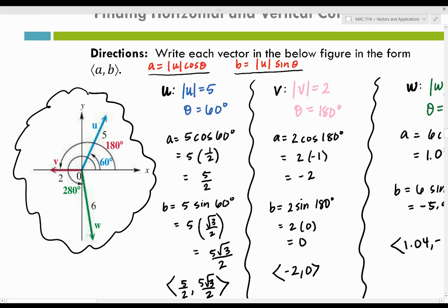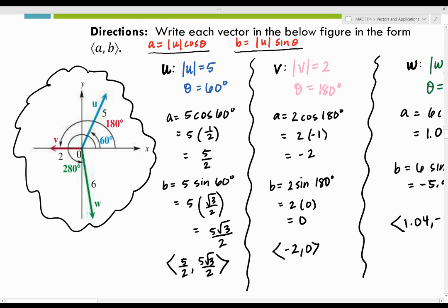For vector U with magnitude 5 and direction angle 60 degrees: cosine of 60 is one-half, so 5 times one-half equals 5 over 2 — that's the horizontal component. Sine of 60 degrees is square root of 3 over 2, and 5 times that gives 5 square root of 3 over 2 for the vertical component. I didn't use a calculator because 60 degrees is a unit circle angle, so I left it in exact form. If they give you a unit circle angle, leave the answer exact.